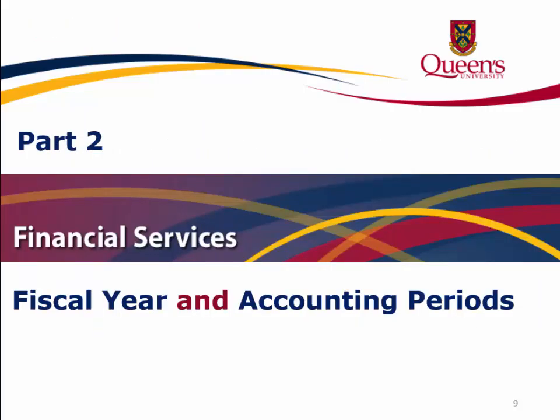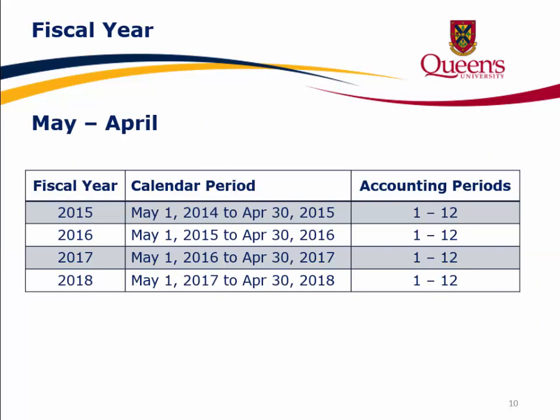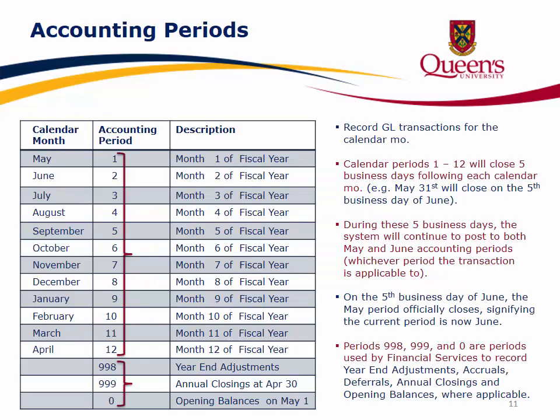Part 2: Fiscal Year and Accounting Periods. The university's fiscal year runs from May to April. For example, fiscal year 2016 represents the calendar period May 1, 2015 to April 30, 2016. This calendar period represents accounting periods 1 through 12. Accounting periods record GL transactions for the calendar months. Calendar periods 1 through 12 will close five business days following each calendar month — for example, May 31 will close on the fifth business day of June.